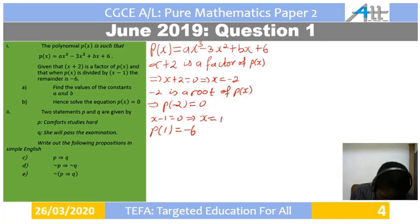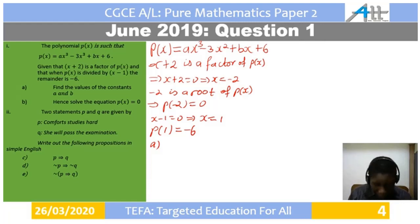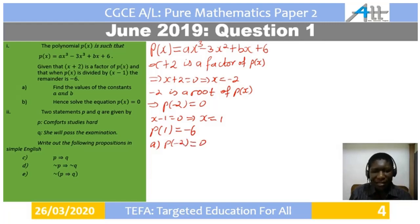Now let's go to part A, which says find the values of the constants A and B. We are going to use the fact that P of negative 2 is 0 and P of 1 is negative 6 to get the values of A and B.